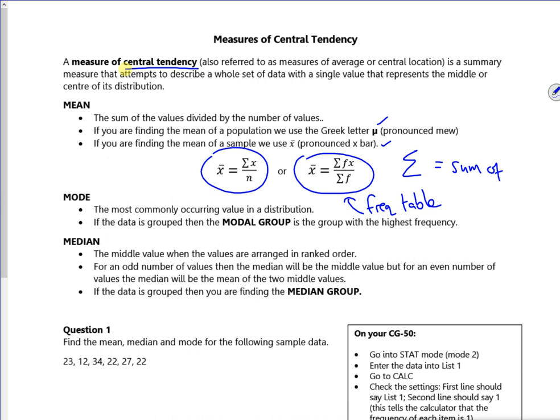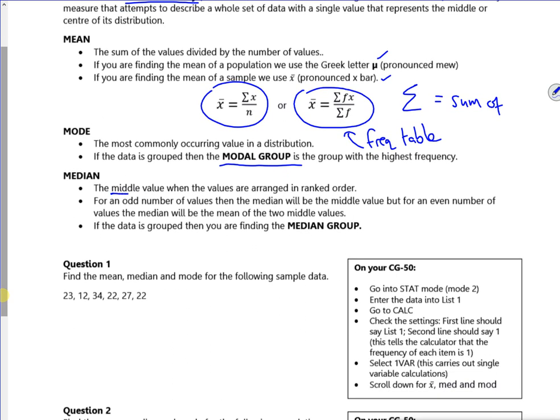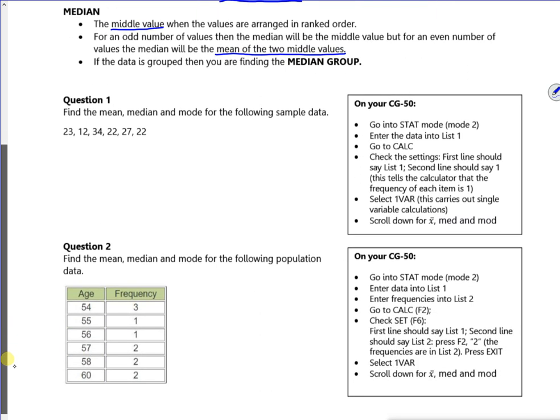Mode is the most common. You might have a modal group. The median is the one in the middle. You stick them in an order and see which one's in the middle. For an odd number of values, the median is the middle, but for an even number, it will be the mean of the two middle values.